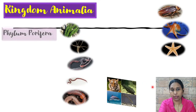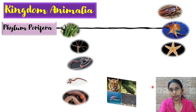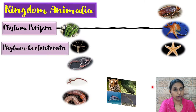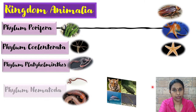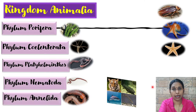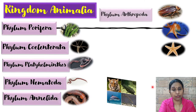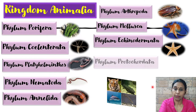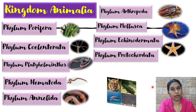The 10 phyla are: phylum Porifera, phylum Cnidaria, Platyhelminthes, Nematoda, Annelida, Arthropoda, Mollusca, Echinodermata, Protochordata and Chordata.